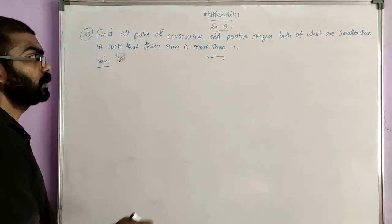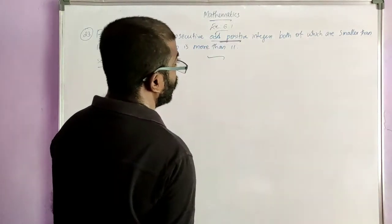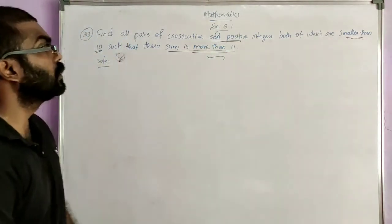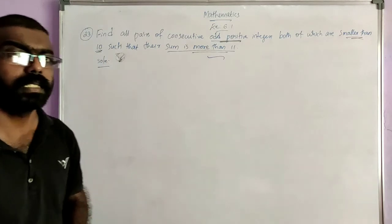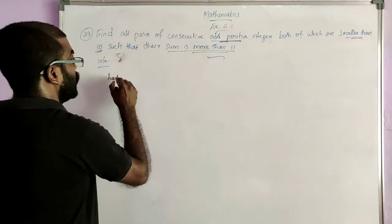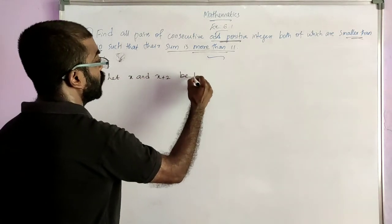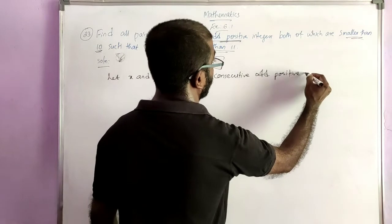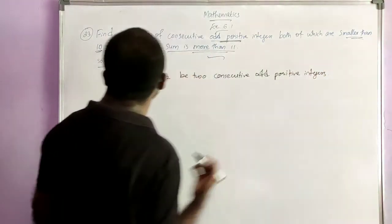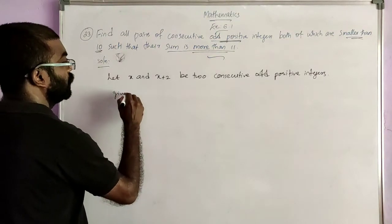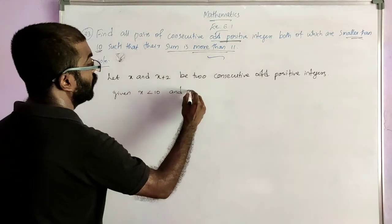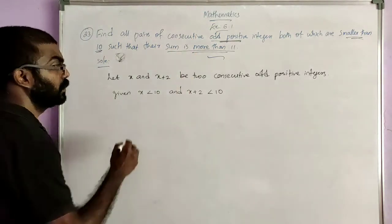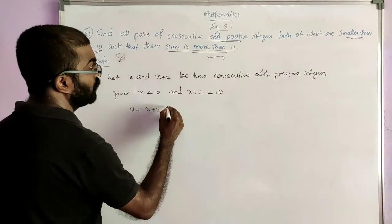Now we move on to question number 23: find all pairs of consecutive odd positive integers, both of which are smaller than 10, such that their sum is more than 11. Here we have two consecutive odd positive integers — let them be X and X plus 2. Let X and X plus 2 be two consecutive odd positive integers. Given that the numbers are smaller than 10, we can write X is less than 10 and X plus 2 is also less than 10. The next condition is sum is more than 11, so X plus X plus 2 is greater than 11.